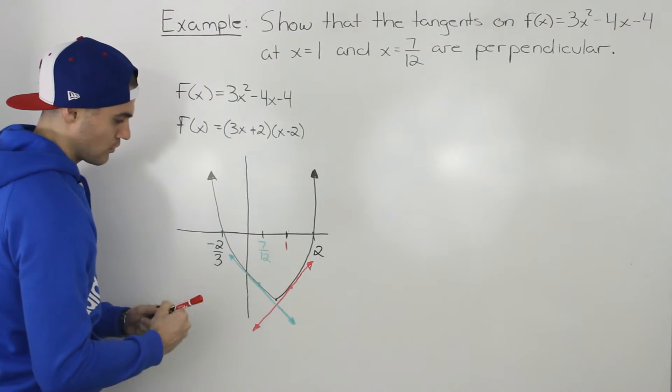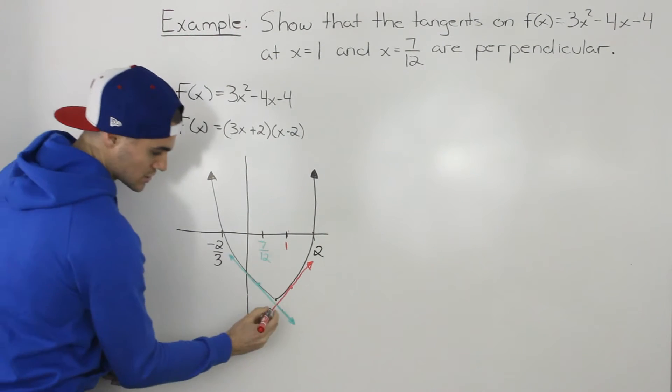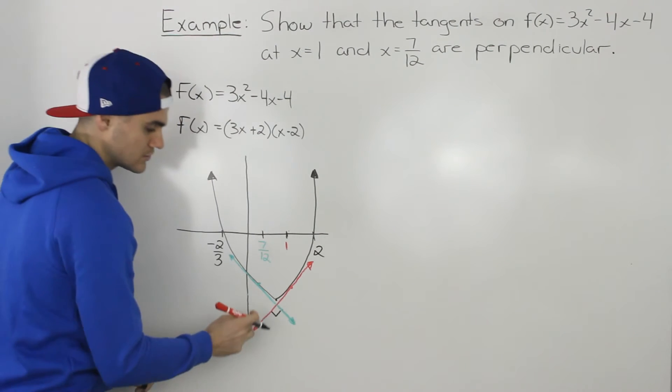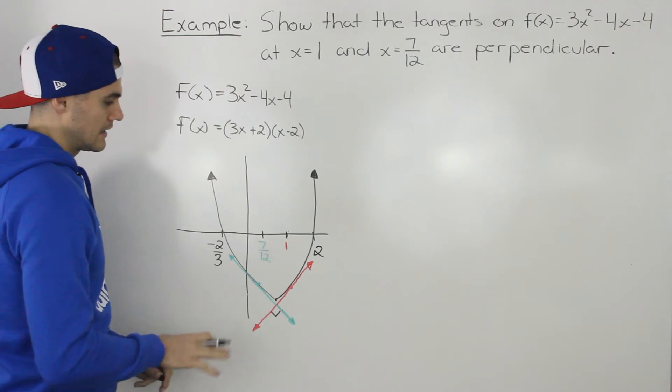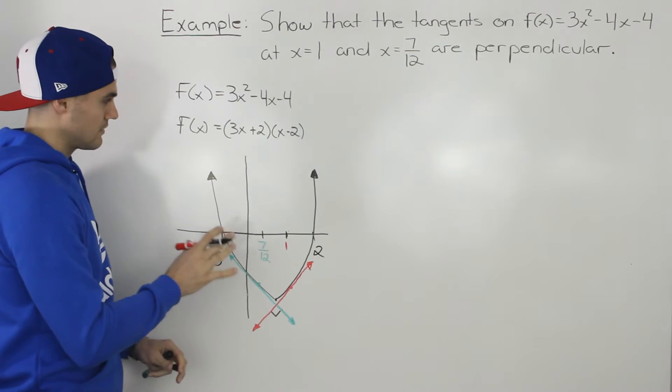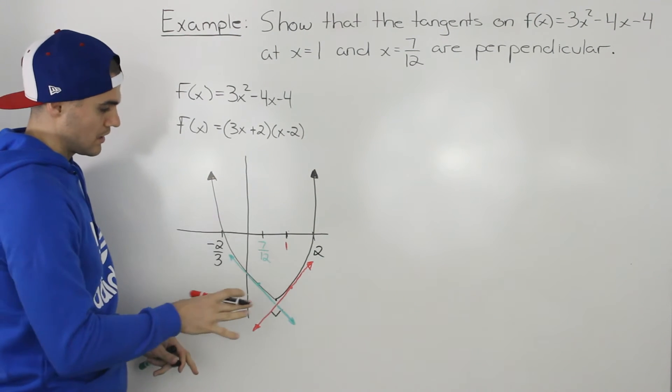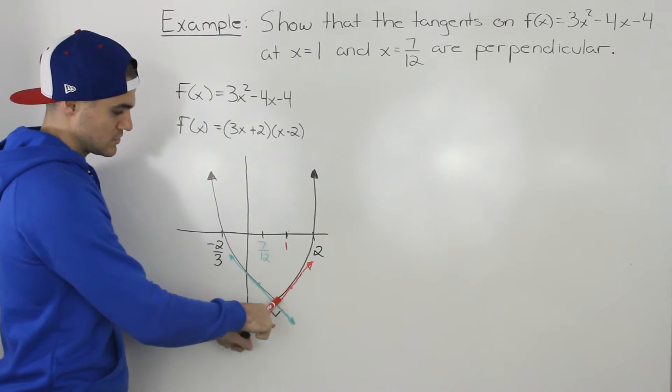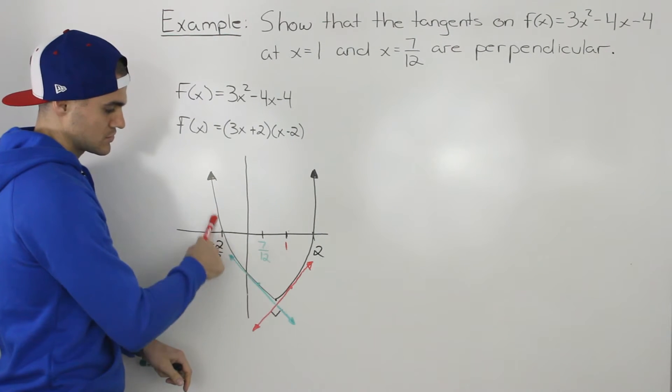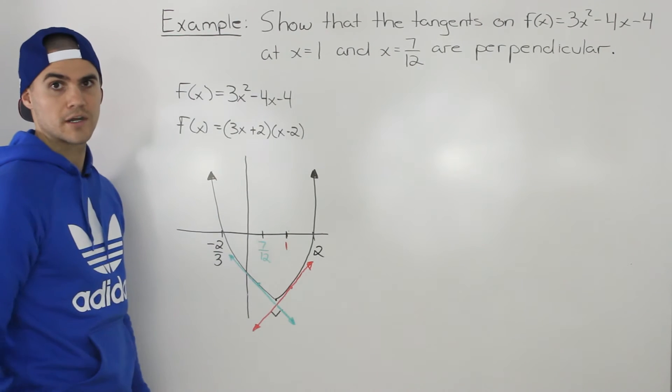We have to show that these two tangents are perpendicular to each other, that they make a 90 degree angle. Now this drawing is not the best, it's not the most to scale, but you get what's going on here. We just have to show that these two tangents at these x values on this function are perpendicular.